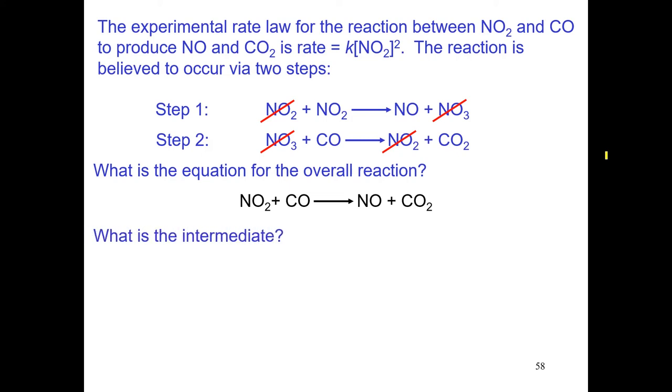Second question, what is the intermediate? Well, remember, an intermediate will be a substance that is produced in an early step and then consumed in a later step. So, what do you think that is? Pause your video and think. We'll come back for the answer. Yes, the answer is NO3. Nitrogen trioxide here is an intermediate producing the first step consumed in the second step.